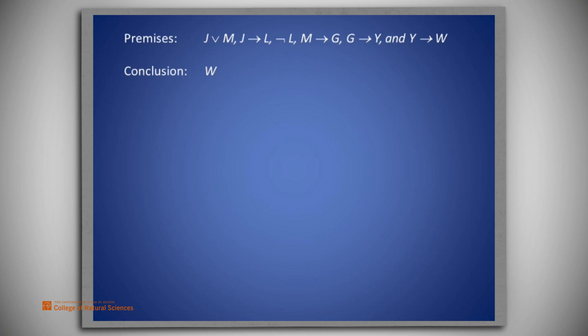The first premise tells us that either J or M is true. We would then have M through the disjunctive syllogism rule if J were shown to be false. Can we show that J is false?